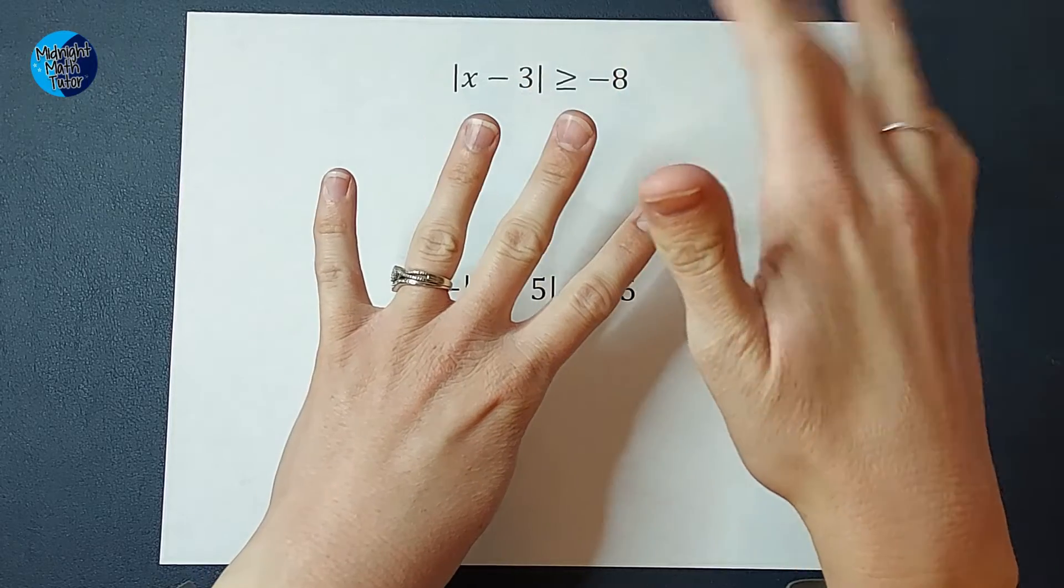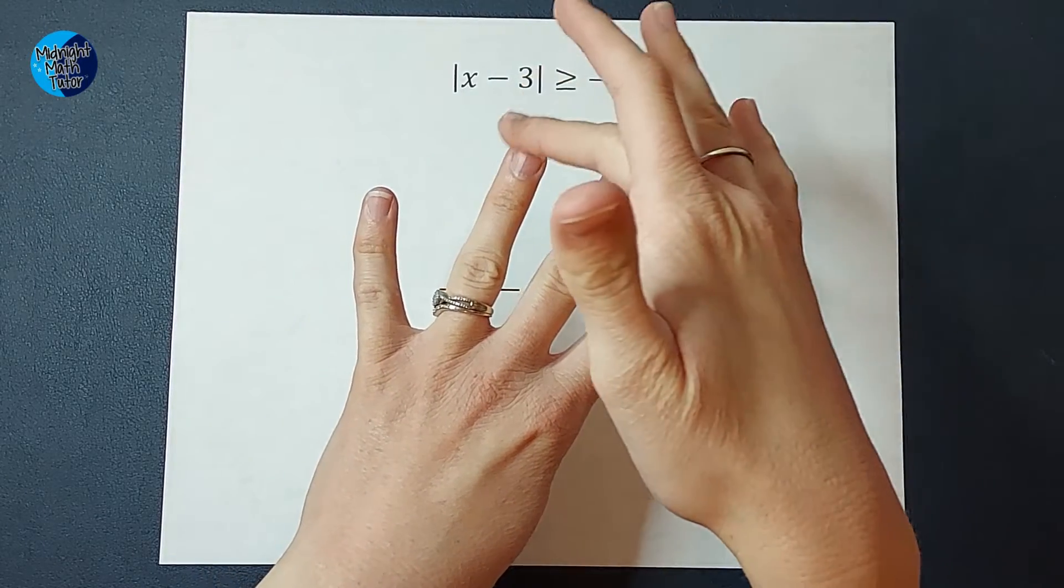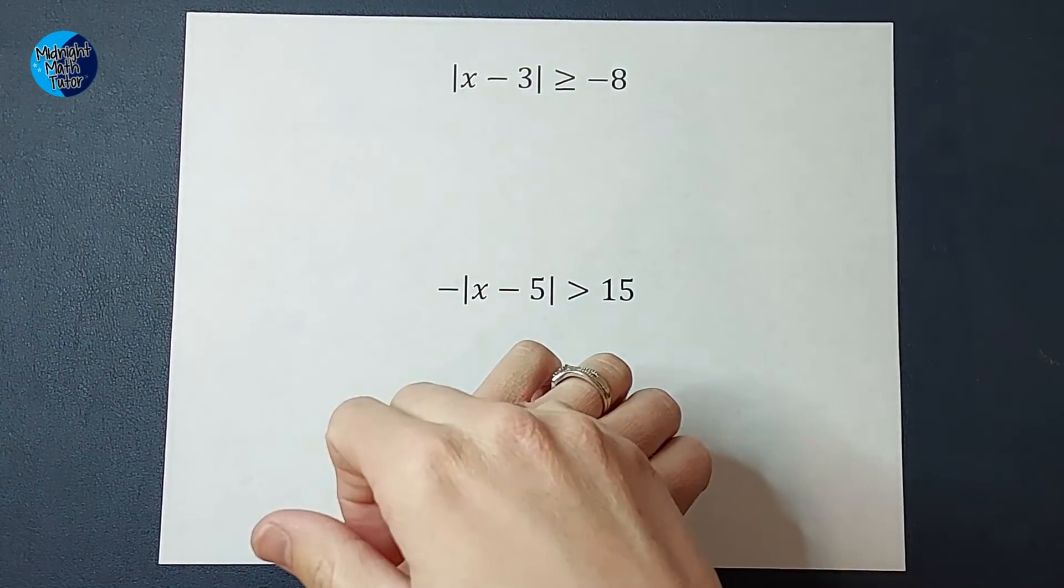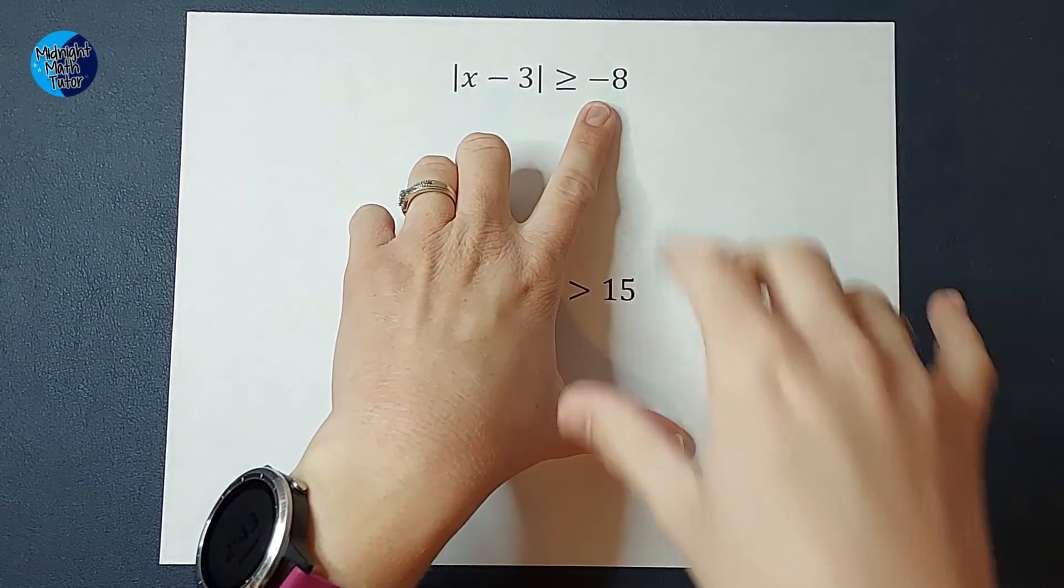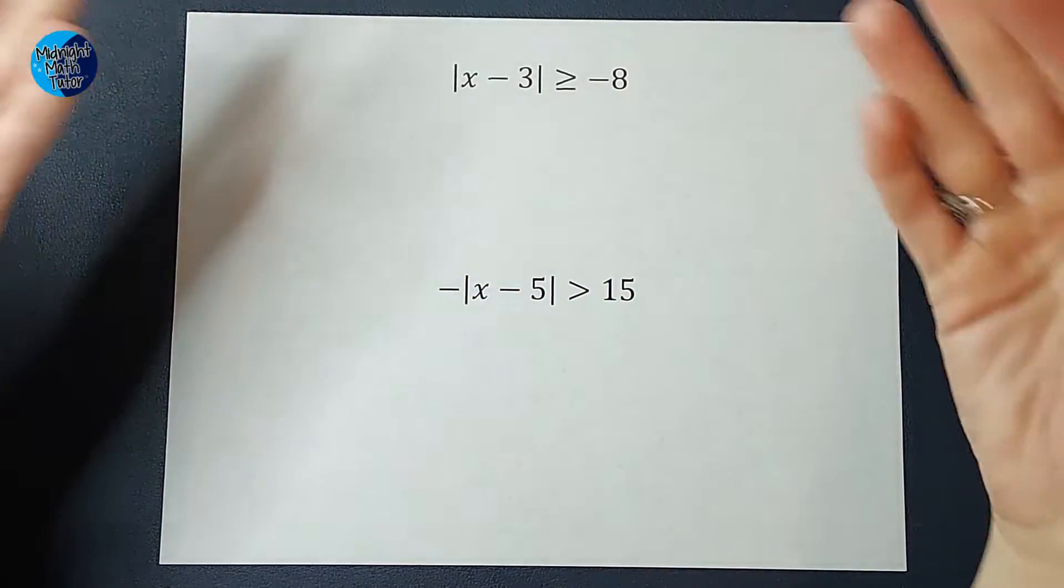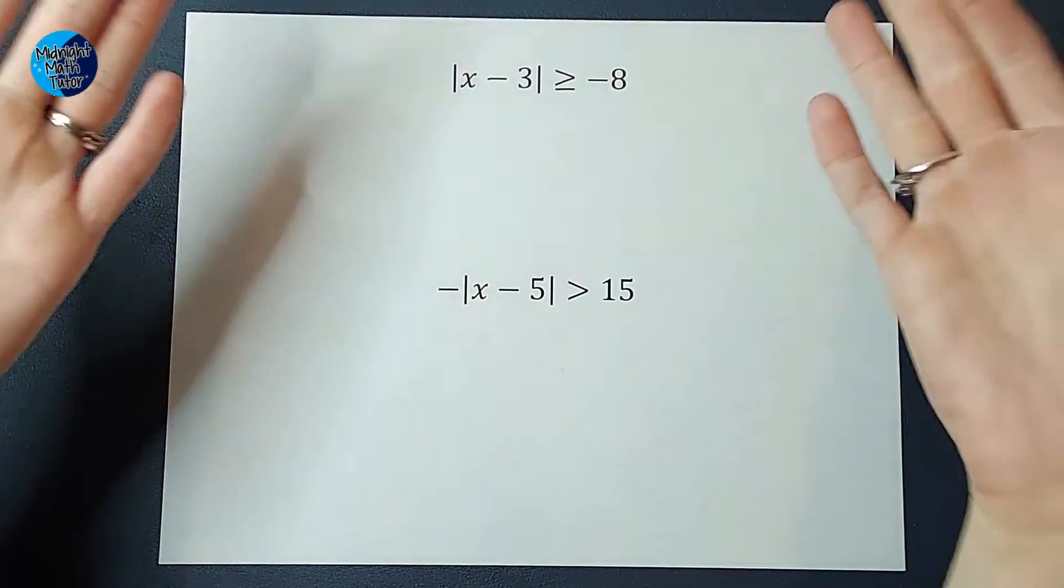You can get an and inequality, an or inequality, all real numbers or no solution. The all real numbers and no solution have to deal with when you have a negative here. So obviously I'm going to show you one of each, you're welcome.